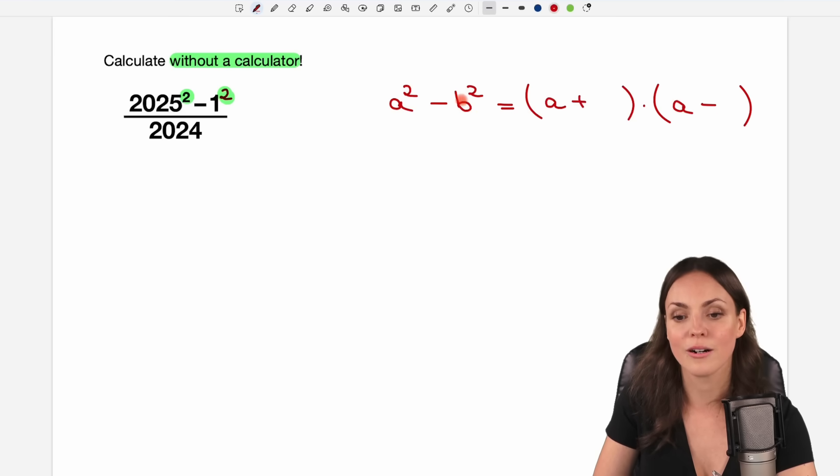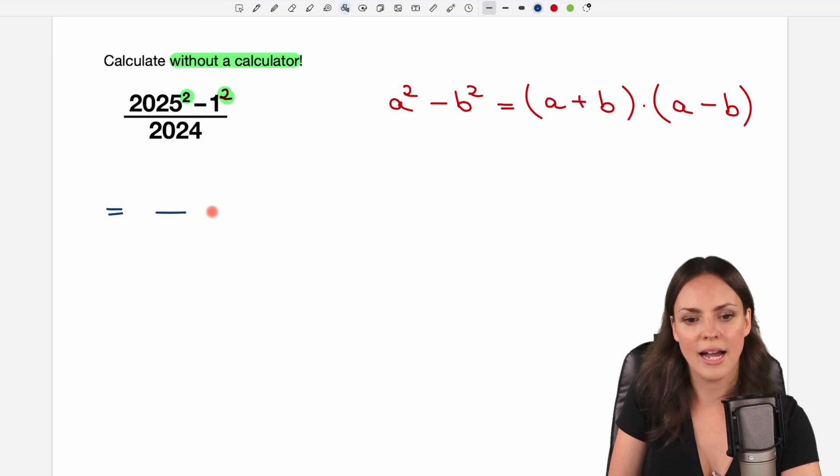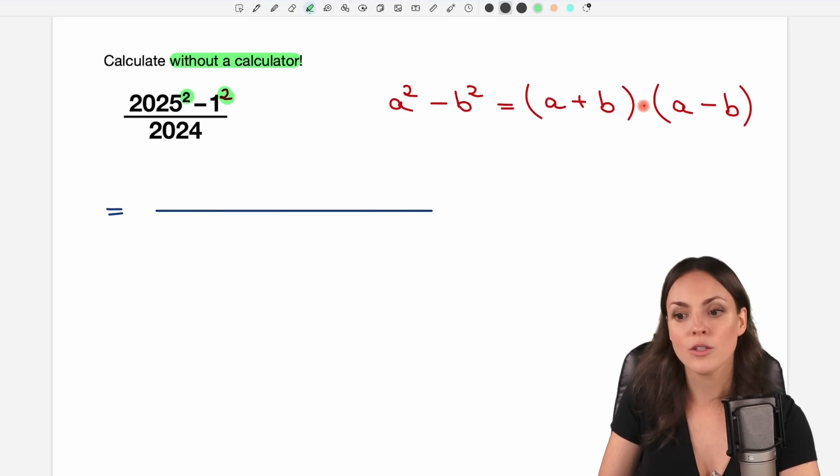And the second part of this difference, the b, it is here as the second part and here as the second part as well. And we're going to use this now to write our difference of squares here as this product. So we have two parentheses that are multiplied by each other. In one we have a plus, in the other one we have a minus.